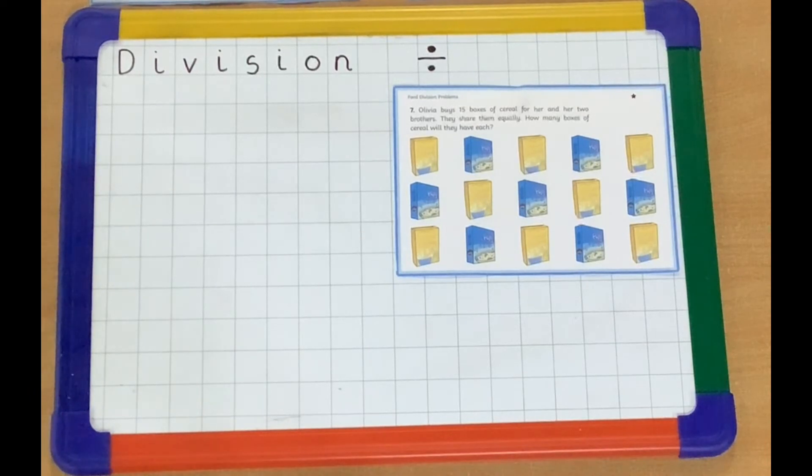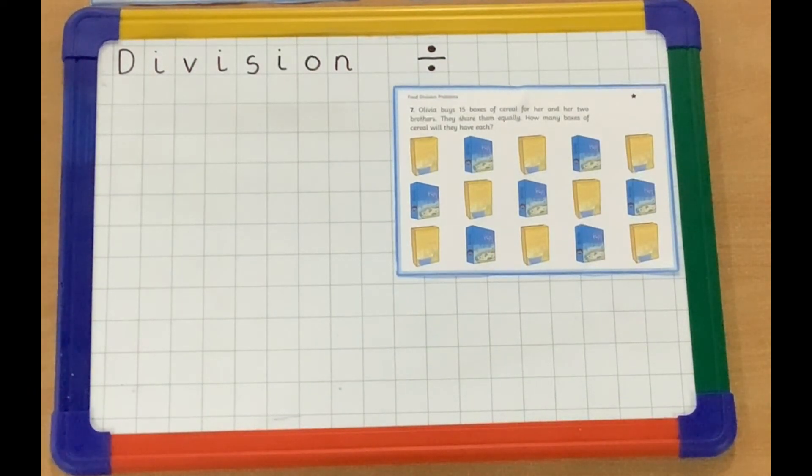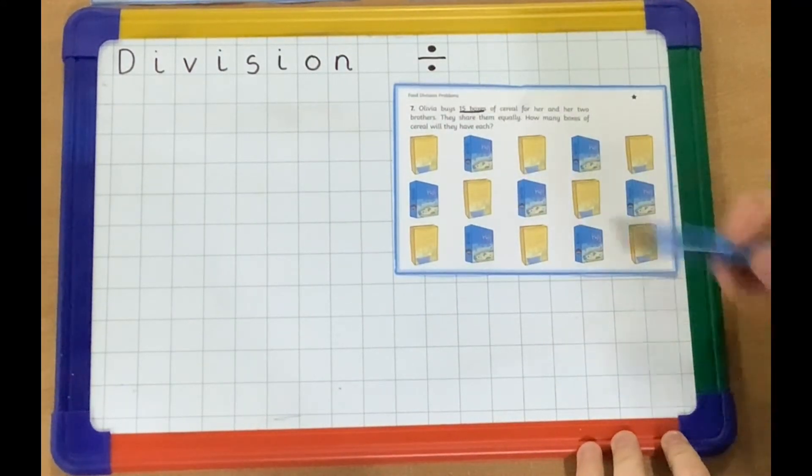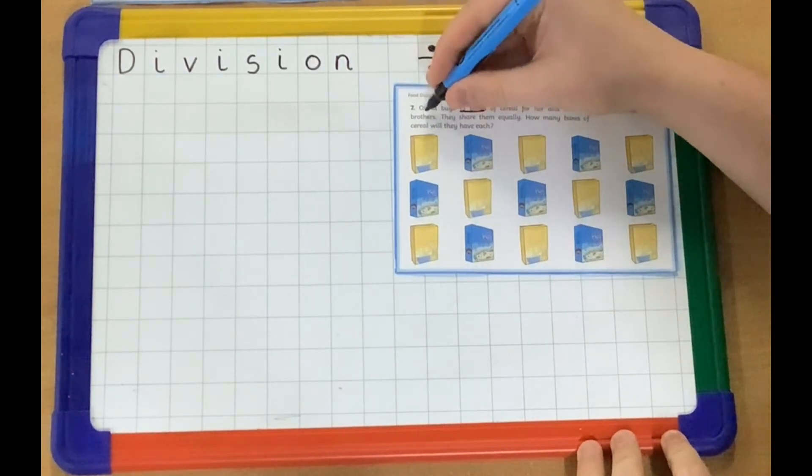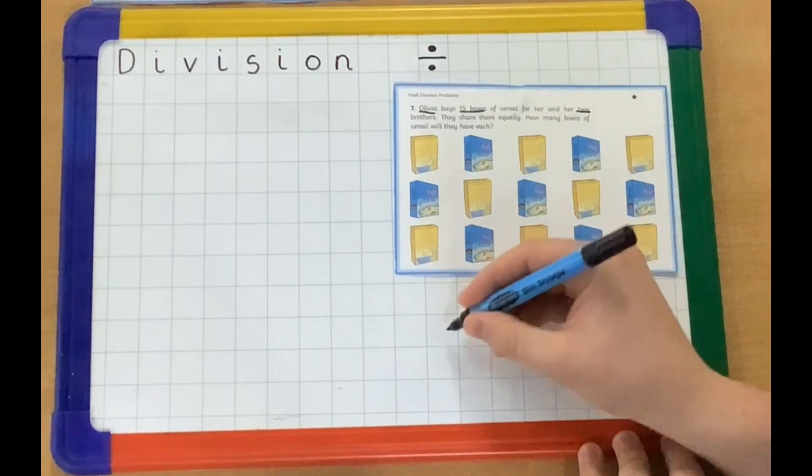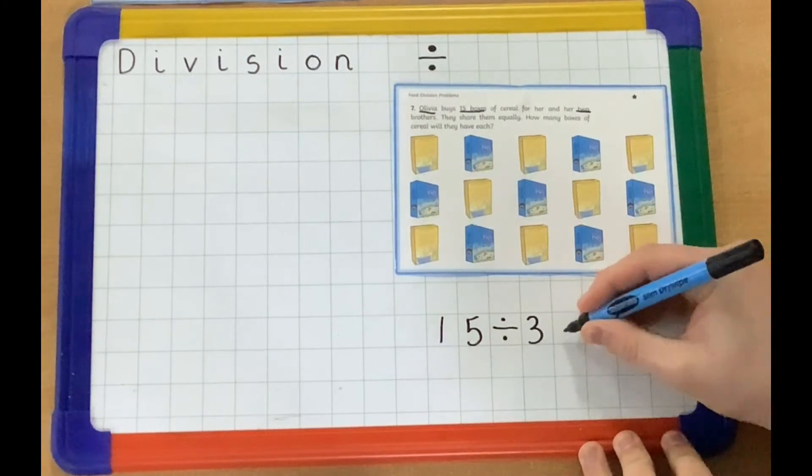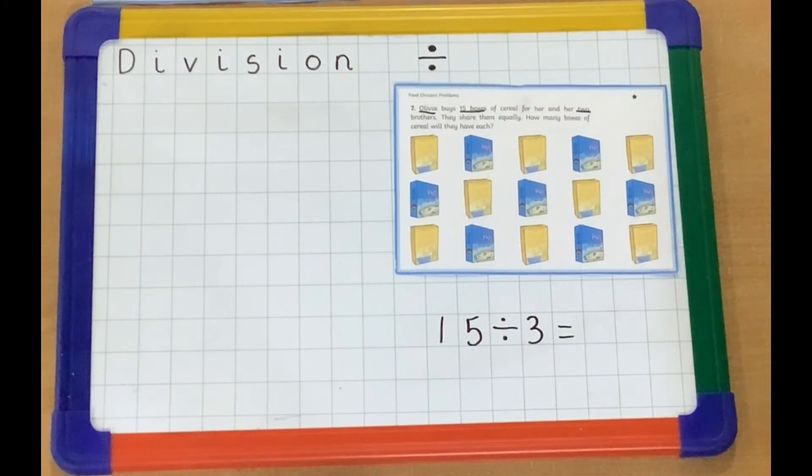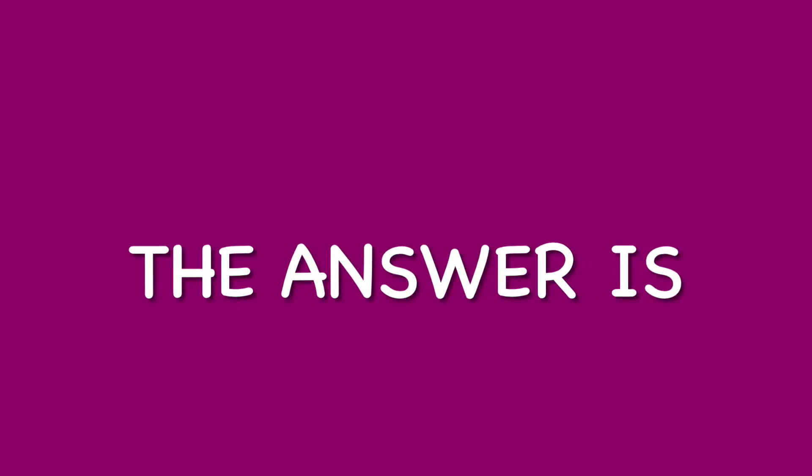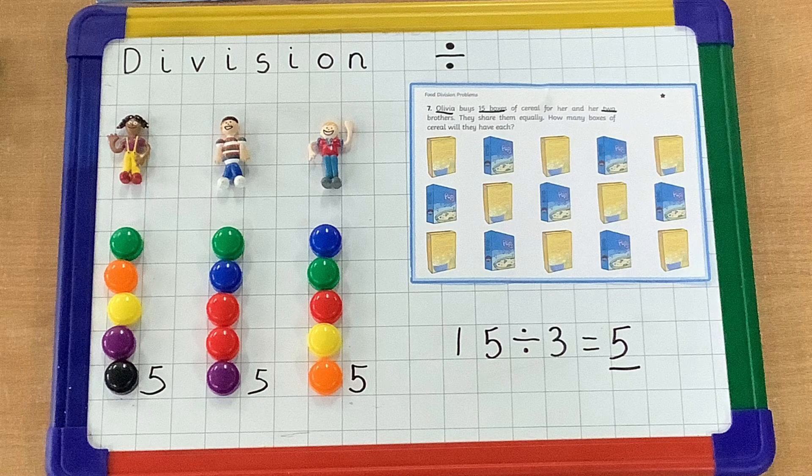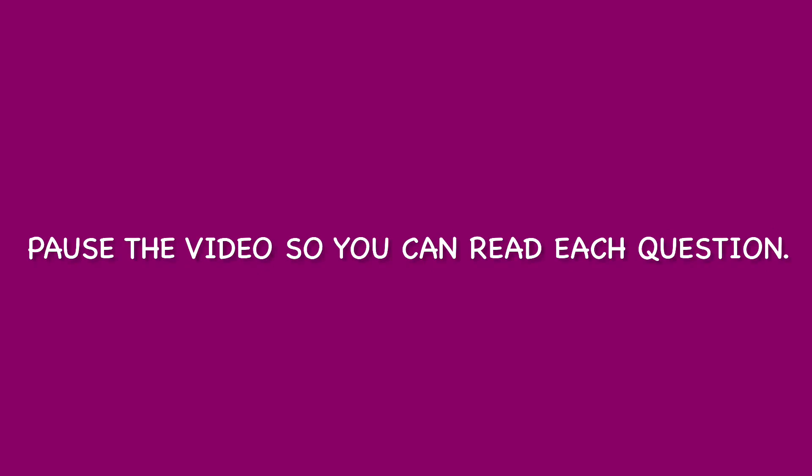See if you can have a go at this one. Remember, you need to find out how many items you have and then how many you're going to divide that between. So, I'm going to tell you for this one, you have 15 boxes of cereal. One, two, three, four, five, six, seven, eight, nine, ten, eleven, twelve, thirteen, fourteen, fifteen. And then we're sharing them between Olivia and her two brothers. So, we have 15 divided by three. We have Olivia and she has two brothers. Equals. Have a go and see if you can do that one at home for me.